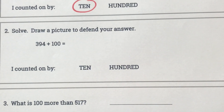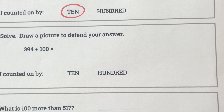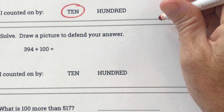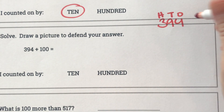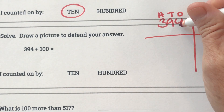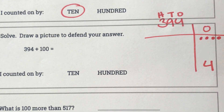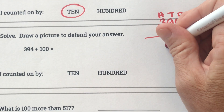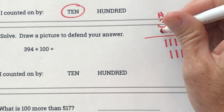It says solve — draw a picture to defend your answer. We have 394 plus 100. My first step is to build what I have. I have 4 one's, which equals 4. How many 10's do I have? Nine 10's — counting by 10: 10, 20, 30, 40, 50, 60, 70, 80, 90.